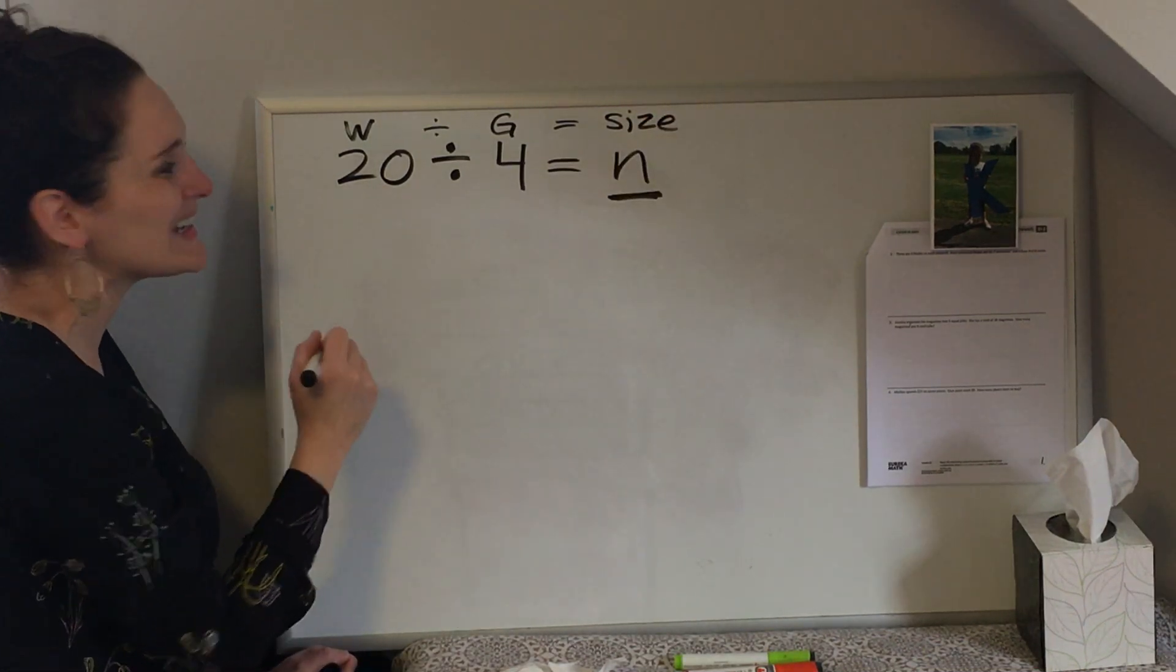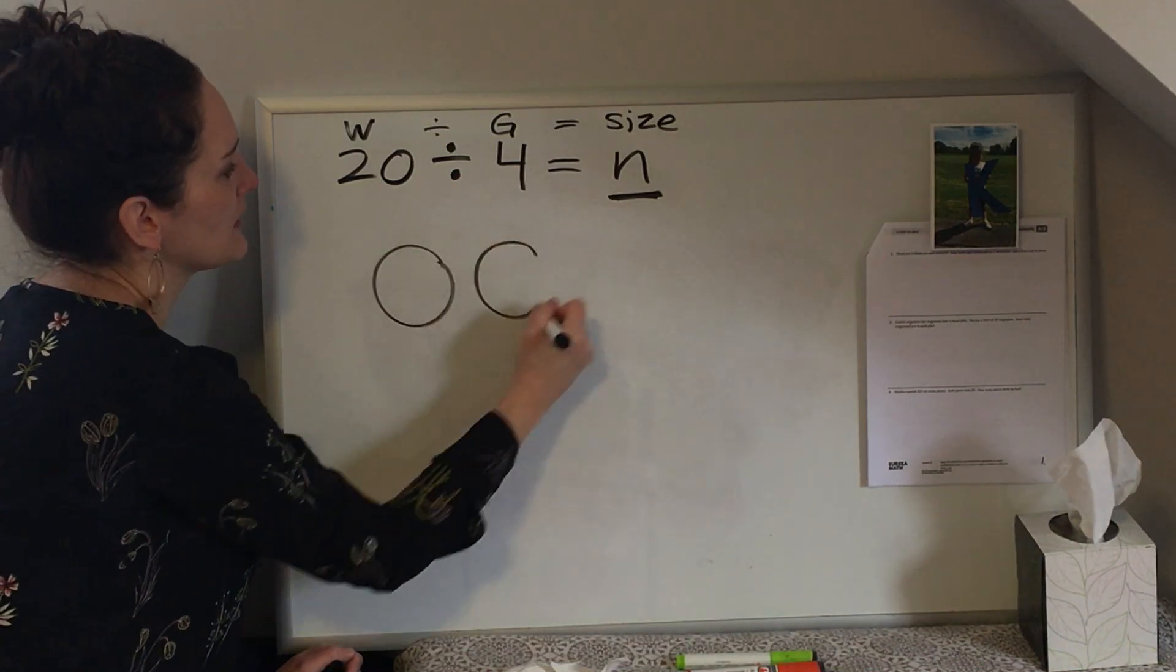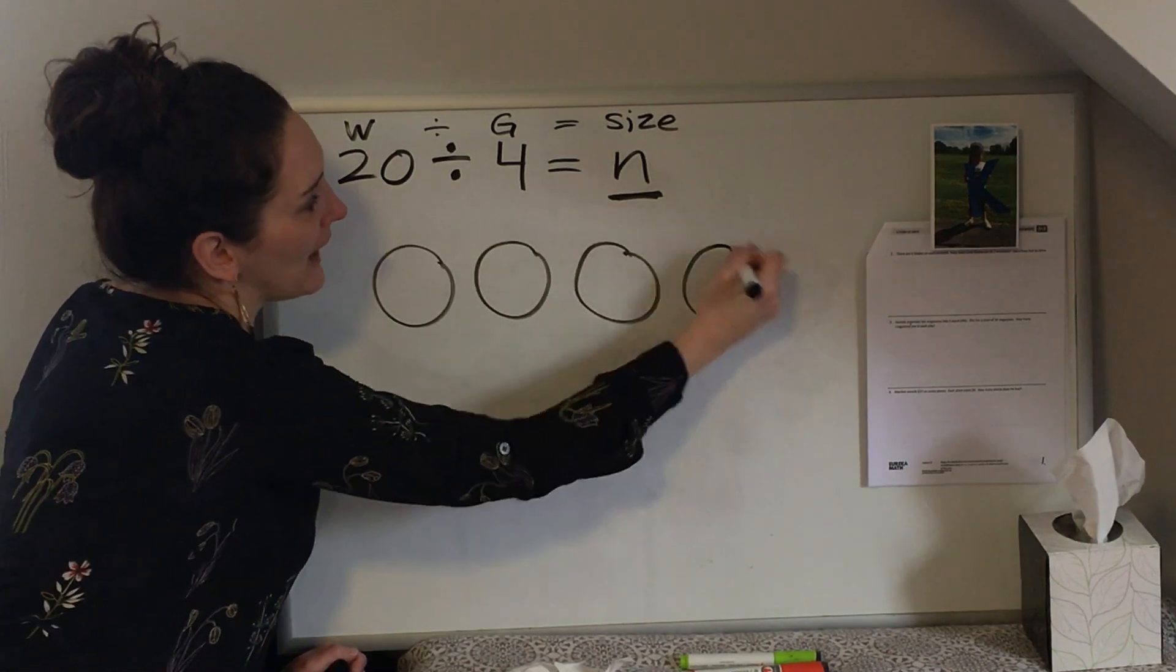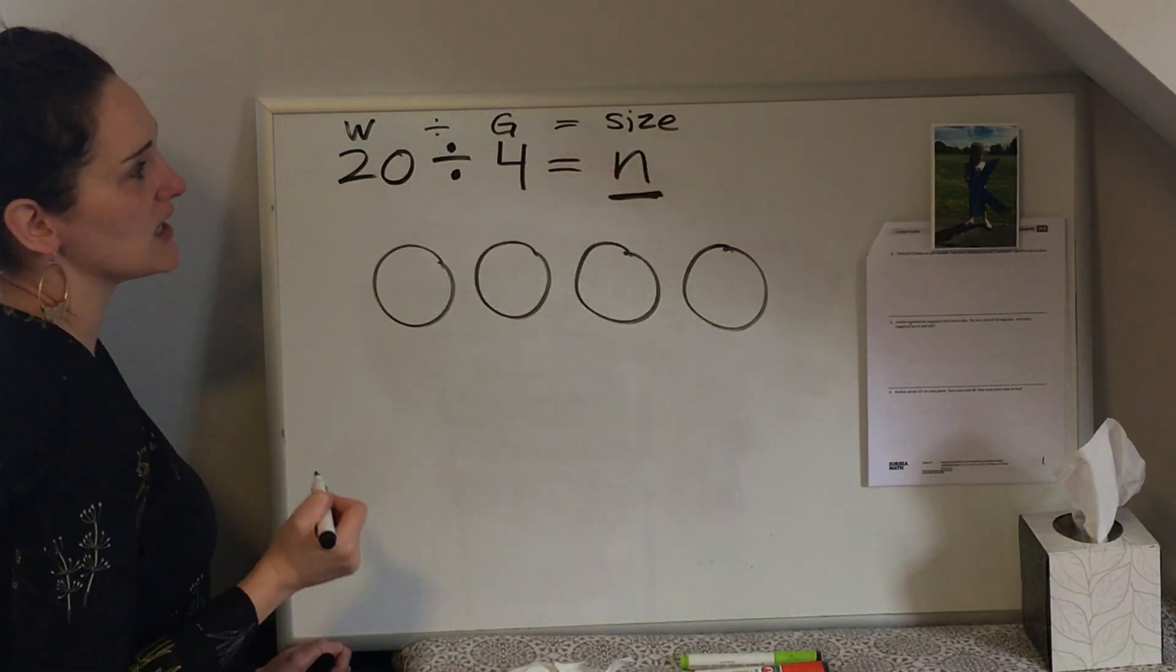So if I have 20 pieces of candy divided into four groups, what I'll do is I'll put my four groups or four bags or packages of candy and I have to figure out how many candies came in each package.